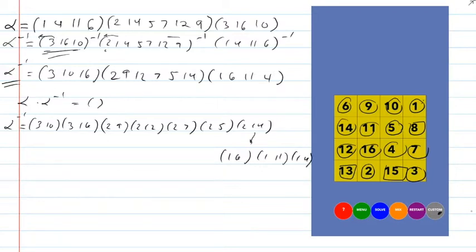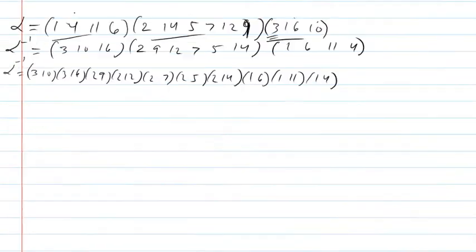So I now have this list, and these are all legal moves — there are 10 of them. And if I do these 10 legal moves, we're going to find out if it does restore the puzzle, as it should.